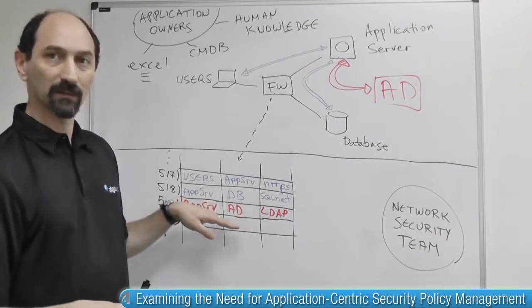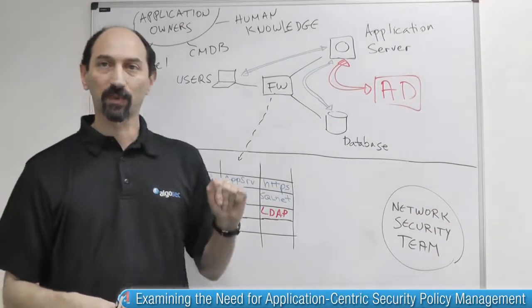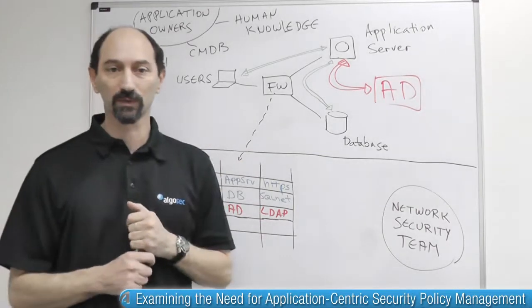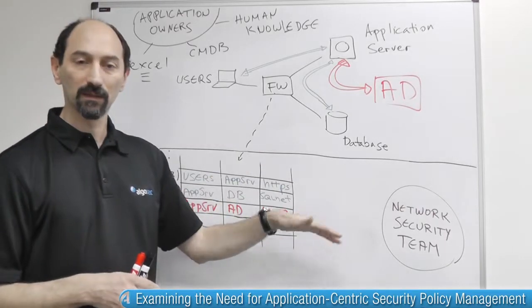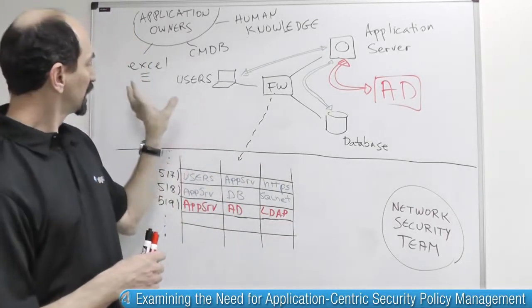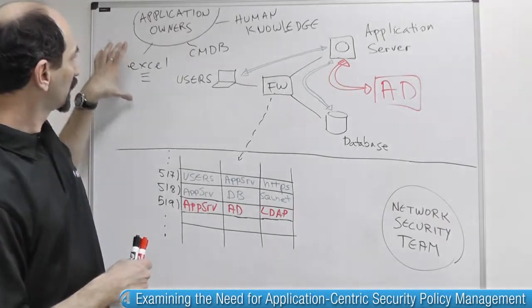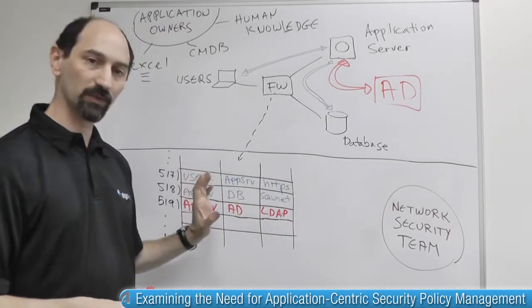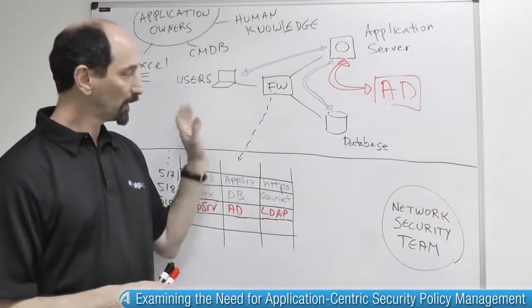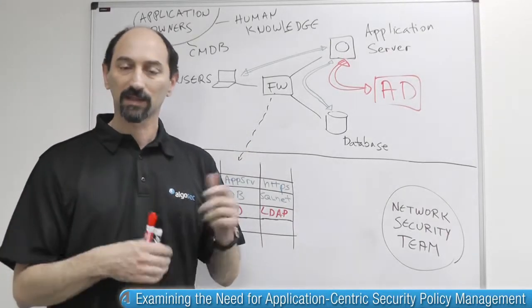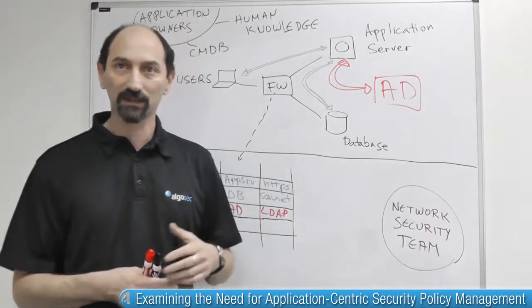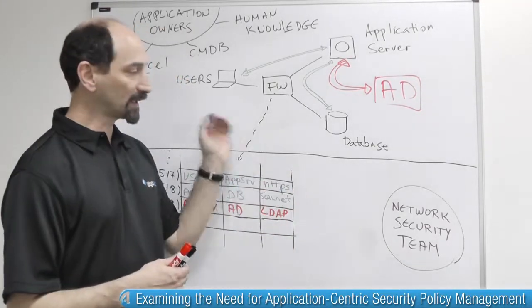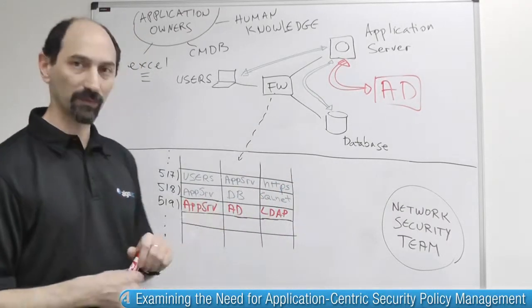And once this is done, the new version of the application, including the red connectivity, can start to function and provide improved service to the users. But getting this done is a complex process. Just conveying the information correctly from the application owner's information systems to the network security team in a way that they can translate it into the firewall policy rules — that process can sometimes take days or even weeks until the two sides understand each other properly, find out what exactly needs to occur, and make the right changes to the firewall policy.